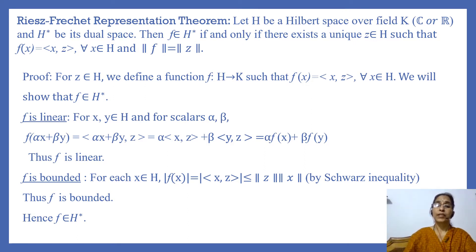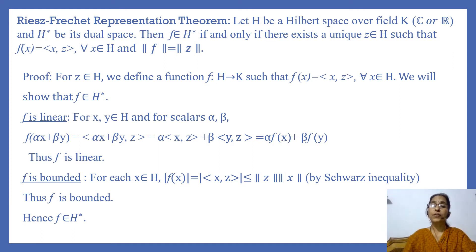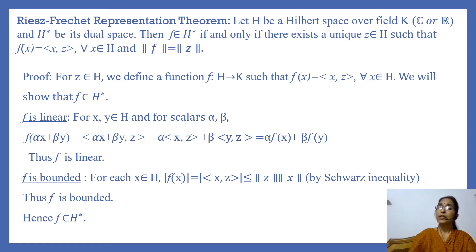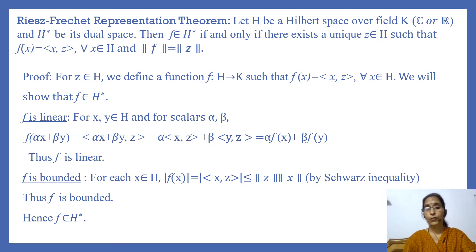Next, we show that F is bounded. For each X in H, the modulus of F(X) equals the modulus of ⟨X, Z⟩, which is less than or equal to ‖Z‖ · ‖X‖ by the Cauchy-Schwarz inequality. Thus F is bounded, since |F(X)| ≤ ‖Z‖ · ‖X‖ for every X in H. Hence we have shown that F is a bounded linear functional on H, so F belongs to H star.